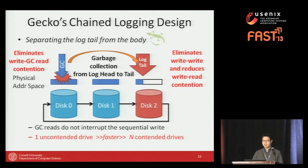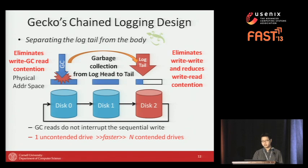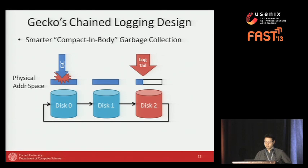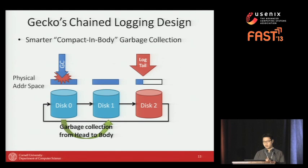However, in this garbage collection scheme, the tail drive — where writes are being appended — must share its throughput with both GC writes and application writes. We can provide better throughput for the application by doing smarter cleaning. Instead of compacting data in the tail drive, we compact data inside the body of the log — we call this compact in-body garbage collection. This effectively solves garbage collection versus write contention.